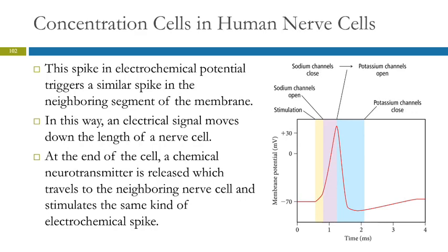That spike in part of the membrane triggers a similar spike in a neighboring segment of that same cell membrane. The spike in potential travels down the cell until it reaches the end of the nerve cell. When it gets there, it releases chemical neurotransmitters that go from one cell to the other, signaling the next cell. Then you get a spike in the second cell, and it travels down the length of that nerve cell — and on and on. This is occurring in your body all the time, and it's electrochemistry.